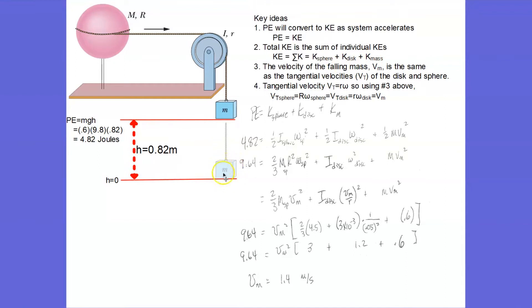Keep in mind, the velocity of the falling mass at this location, which is what the problem is asking for, is going to be the same as the tangential velocity of this disk and the tangential velocity of the spherical shell.